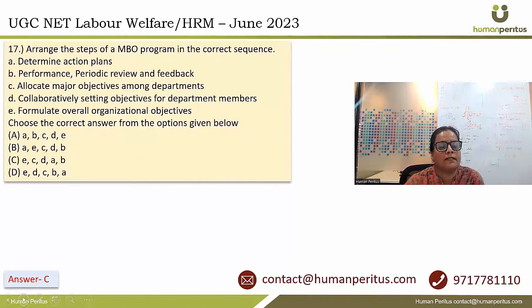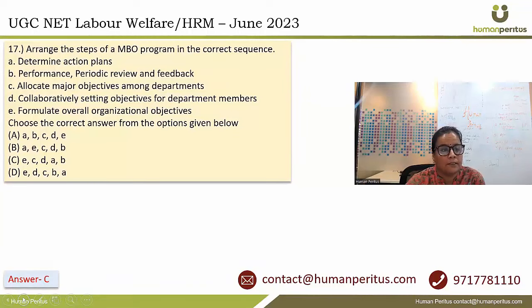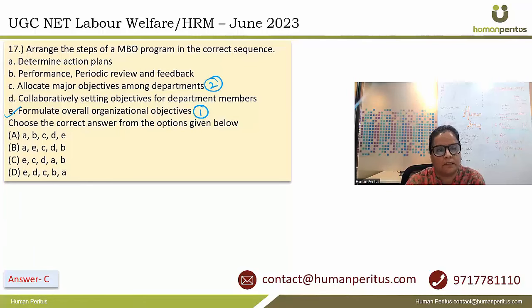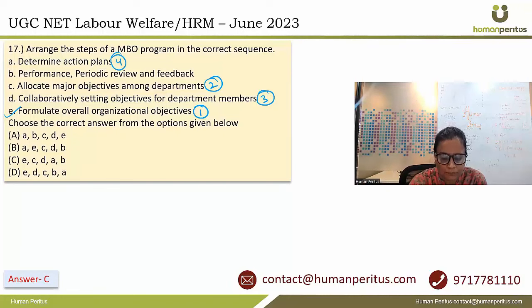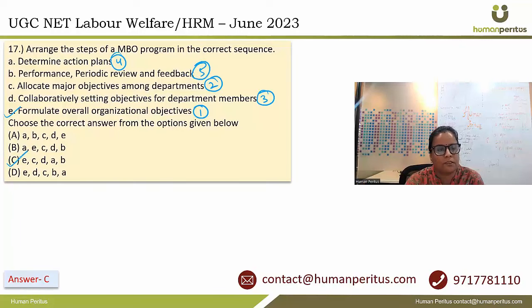In question 17, arrange the steps of the MBO program in the correct sequence. The correct sequence starts with formulation of overall organizational objectives, then allocating major objectives among departments, then collaboratively setting objectives for departmental members, then determining action plans, and last is performance, periodic review and feedback. The correct option is answer C.